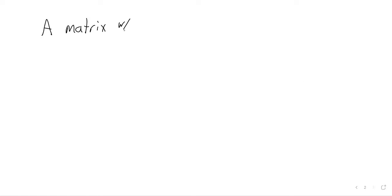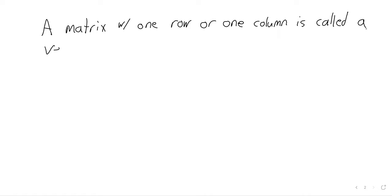A matrix with only one row or one column is called a vector. Although vectors are just special — technically speaking — special kinds of matrices, we tend to do different things with vectors than we do with other matrices. So it's probably better to think of them as being their own type of thing.